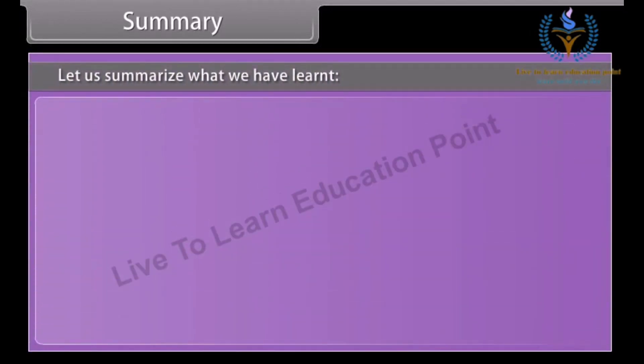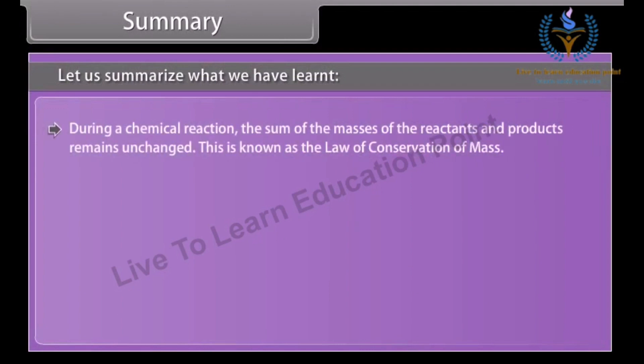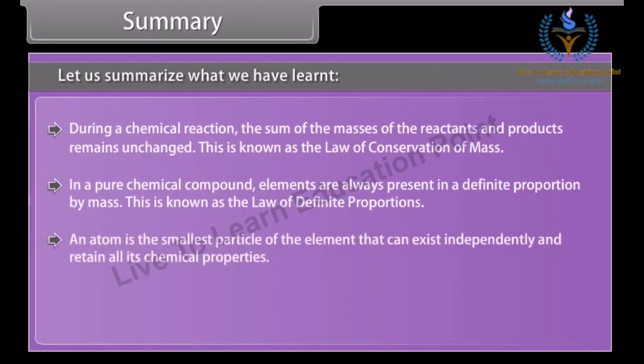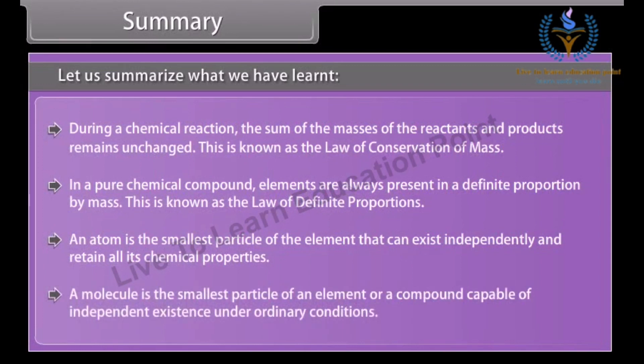Summary. Let us summarize what we have learned. During a chemical reaction, the sum of the masses of the reactants and products remains unchanged. This is known as the law of conservation of mass. In a pure chemical compound, elements are always present in a definite proportion by mass. This is known as the law of definite proportions. An atom is the smallest particle of the element that can exist independently and retain all its chemical properties. A molecule is the smallest particle of an element or a compound capable of independent existence under ordinary conditions.